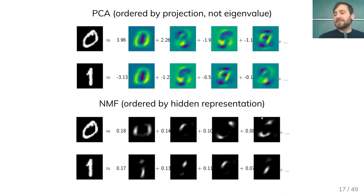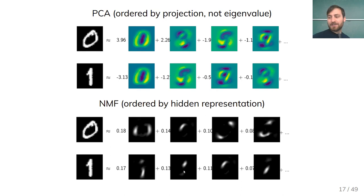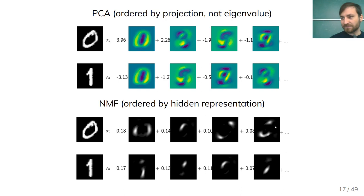In NMF, this is what people call a parts-based representation. Because all numbers must be positive — both the pictures (weights W) and the hidden representation H — there can be no cancellation. Whenever you create something, you cannot take it away. So you get an additive representation: the digit 1 is a combination of these stroke parts, and the digit 0 is a combination of those stroke parts. Some people argue this is easier to interpret.